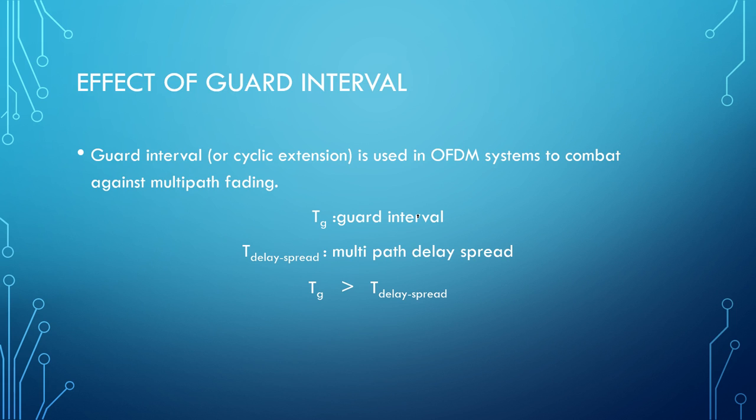The guard interval can be of various types. It can be zero padding, that is, padding the OFDM signal with zero bits either at the prefix or at the suffix. Or it can be a cyclic prefix. As the name suggests, the last bits of the OFDM symbol to be transmitted are taken as a subpart and added to the front of the signal as a prefix and sent over the channel. Or it can be a cyclic suffix, where the front part of the OFDM symbol is taken as a subpart and added to the back of the OFDM symbol to be transmitted.